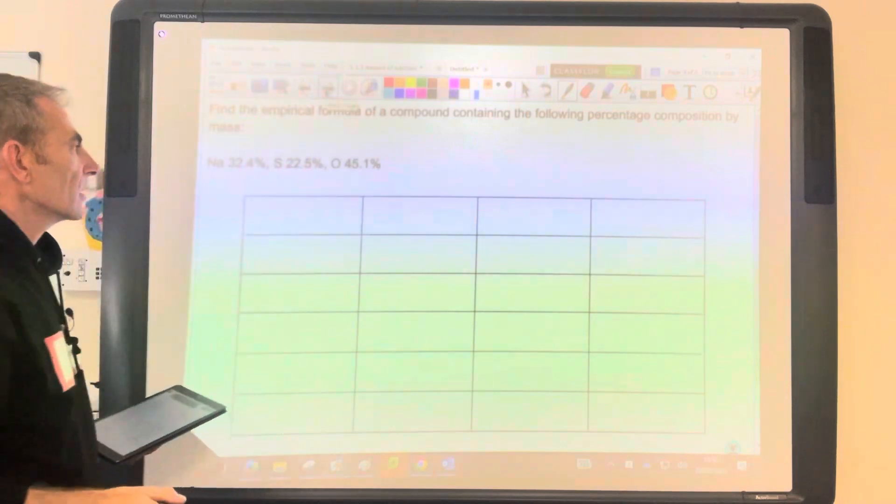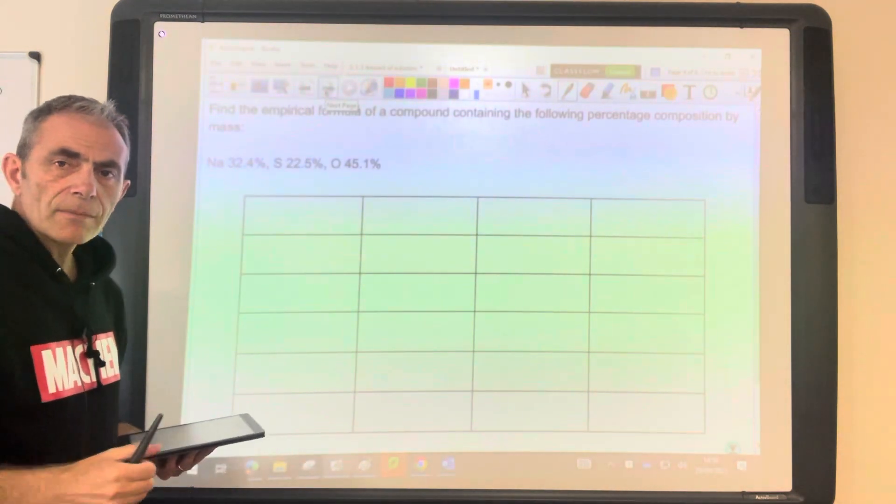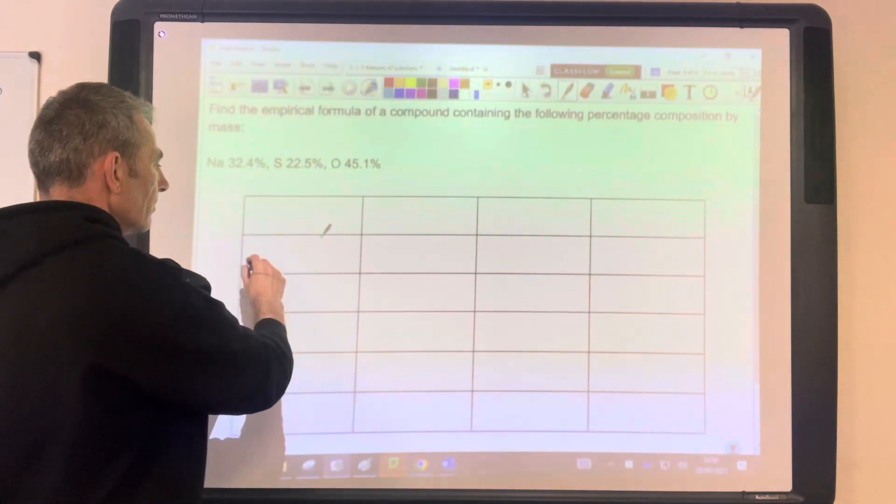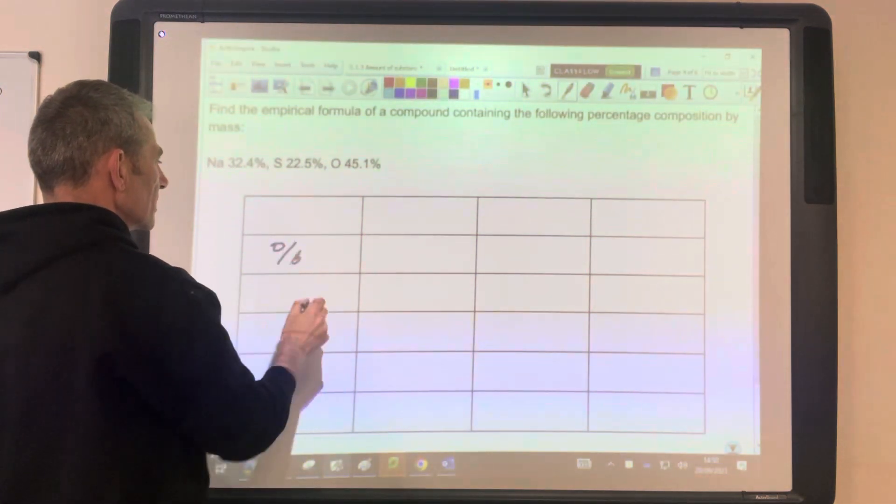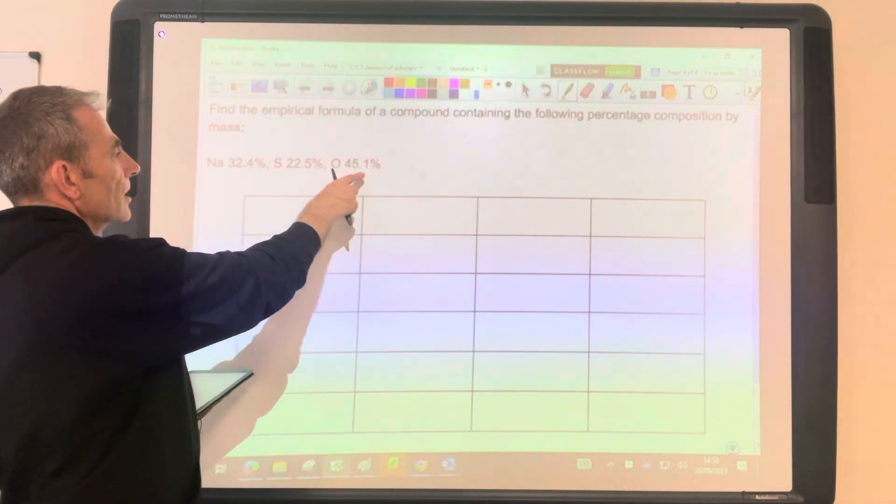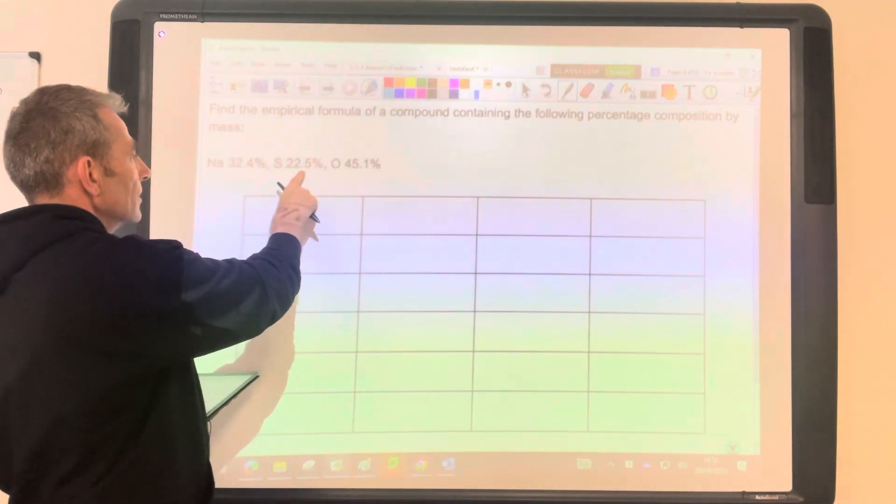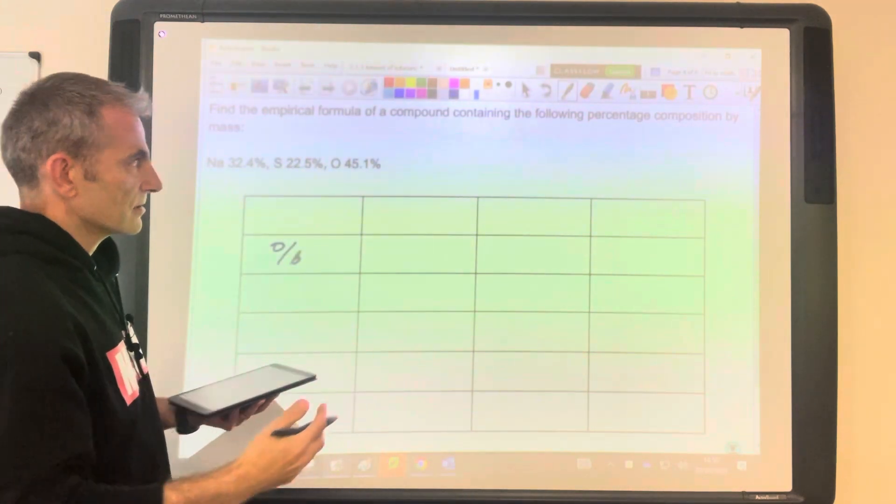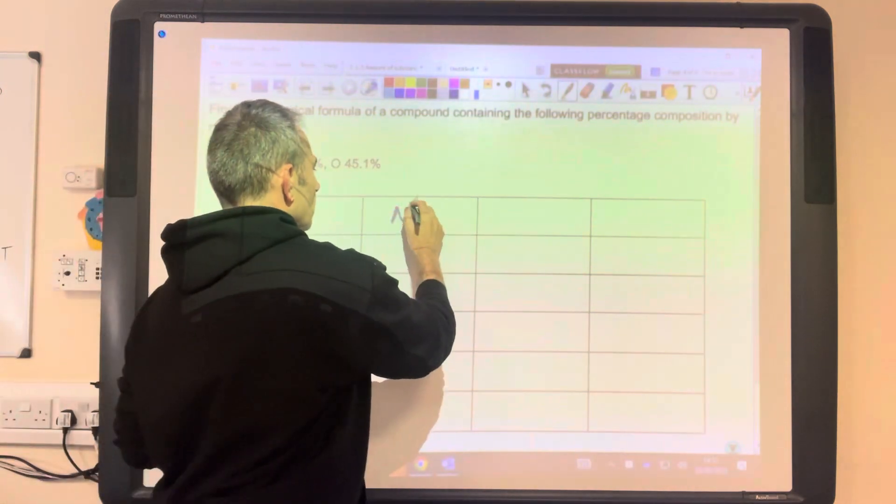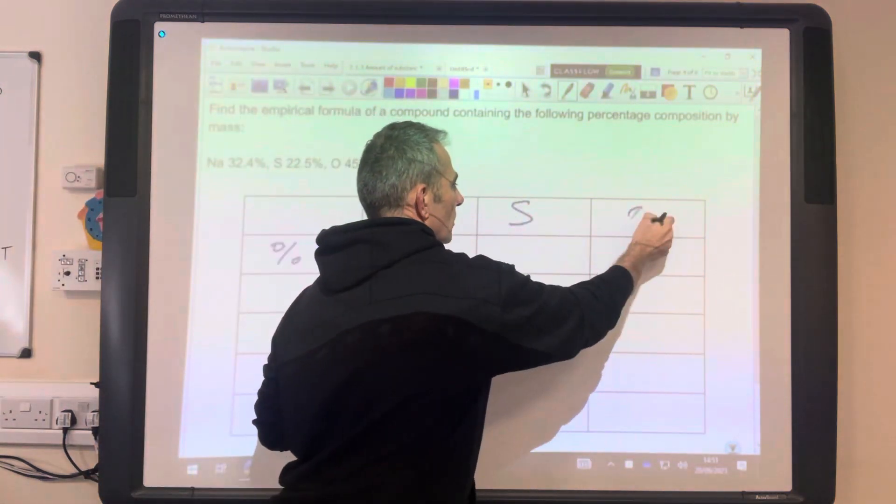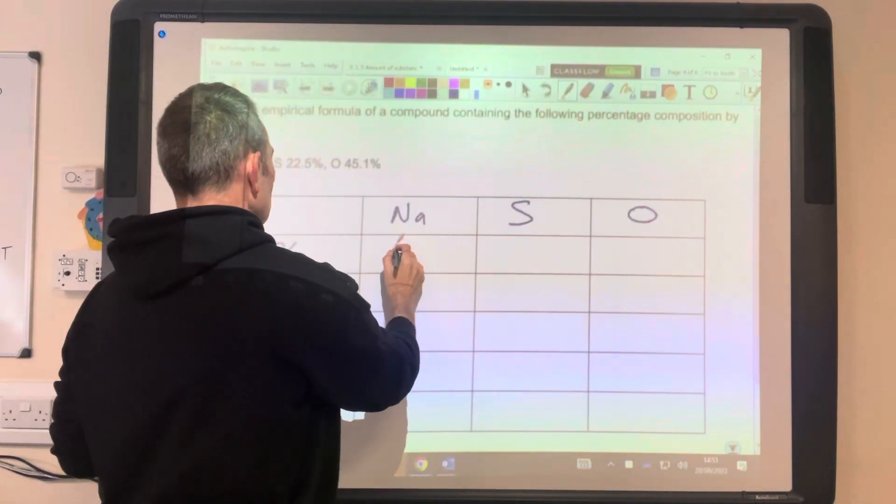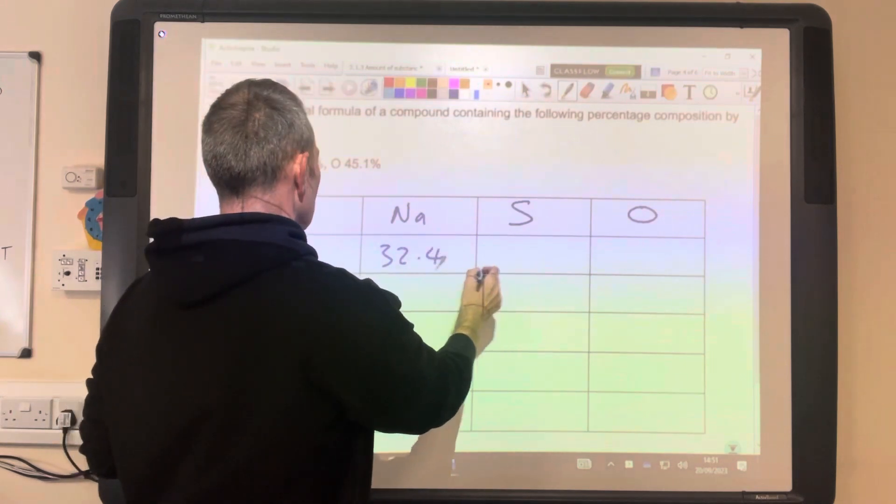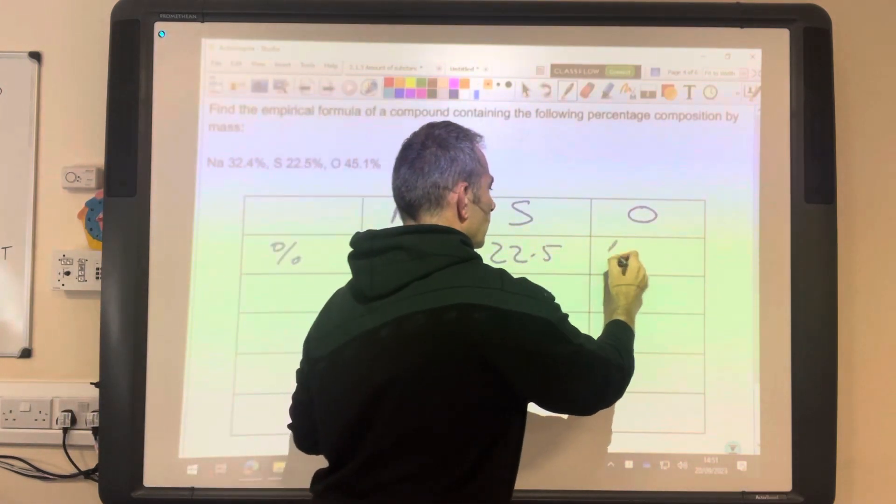Right, next one. So I've switched from grams from mass to percentages. The method's exactly the same. So instead of putting mass here, we're going to put percentage. Basically, what we're doing is we're saying for every 100 grams, we've got that many grams of sodium, that many grams of sulfur, that many grams of oxygen. So it technically is a mass, if that makes sense. So we've got three atoms now: sodium, sulfur, oxygen. So we put the percentages in, 32.4, 22.5, 45.1.